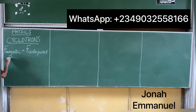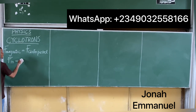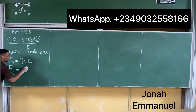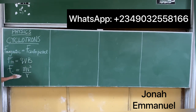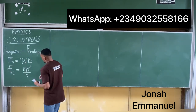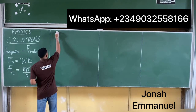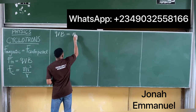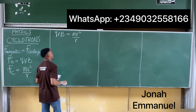From our previous class, magnetic force F_m = qvB, and centripetal force = mv²/r. Equating these two gives us qvB = mv²/r.